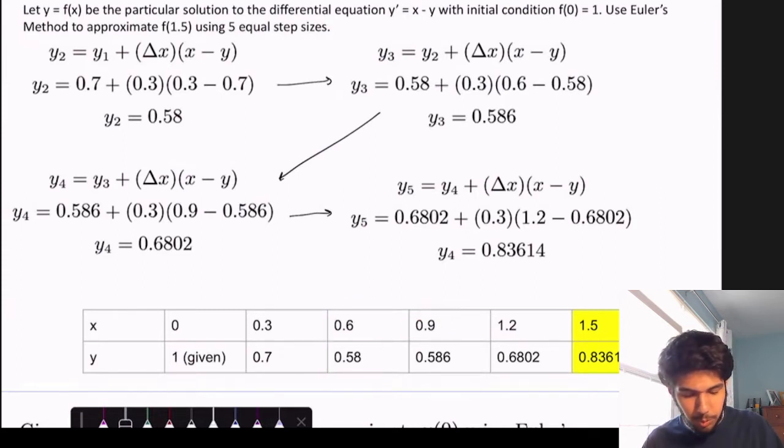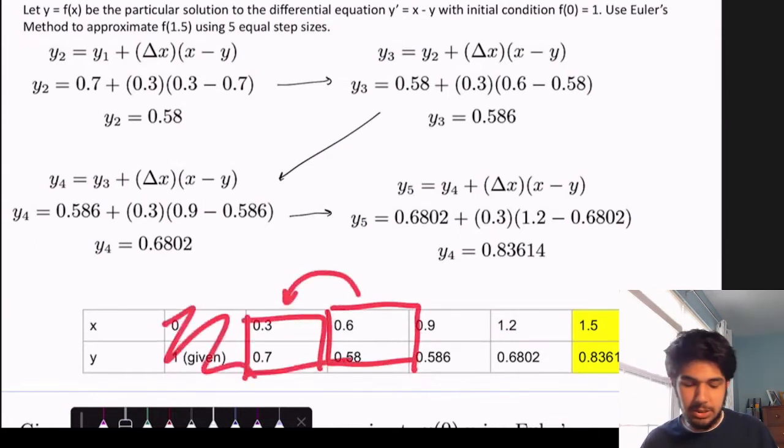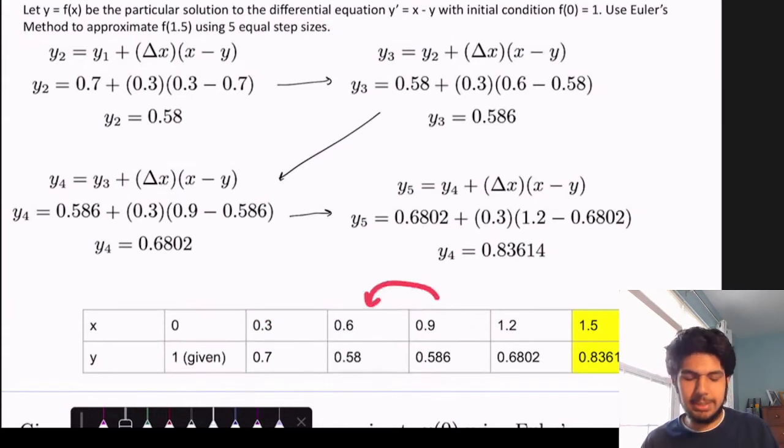So notice that when we're working on this box right here, let's pretend we don't have this 0.586. When we're trying to solve for y of this box right here, we only rely on the information in this box. We don't care about what happened here, because this box depended on this box here, and nothing here, and so on. So it's only the predecessor to it.